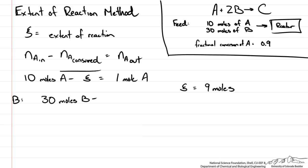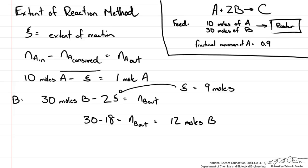For B, we have 30 moles of B in minus 2 times the extent of reaction equals NB out. Since the extent is 9, we get 30 minus 18 equals 12 moles of B. For C, there is no C entering and no consumption, so generation equals output. We have 1 mole of C generated per mole of reaction, so NC out equals the extent of reaction, which is 9 moles.